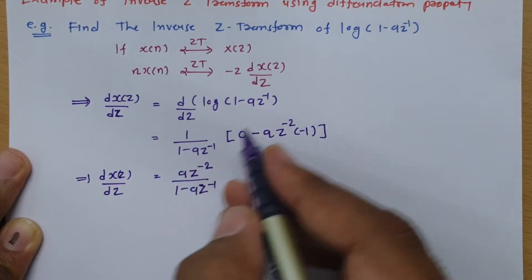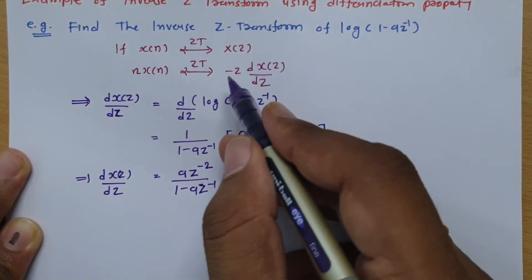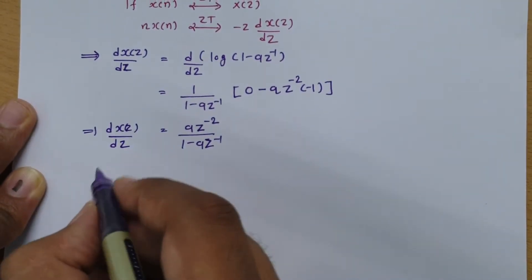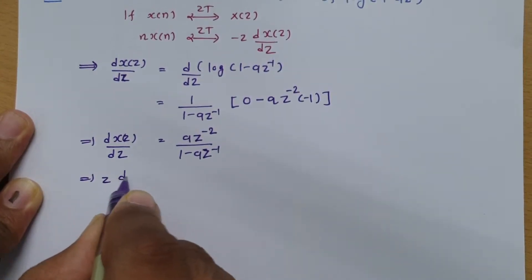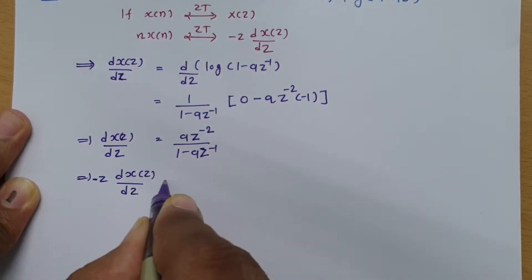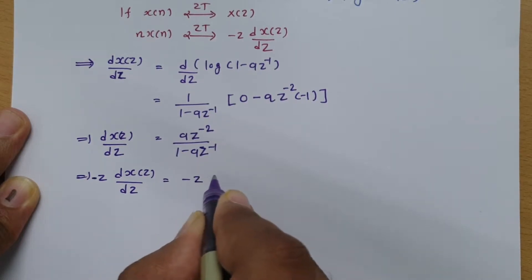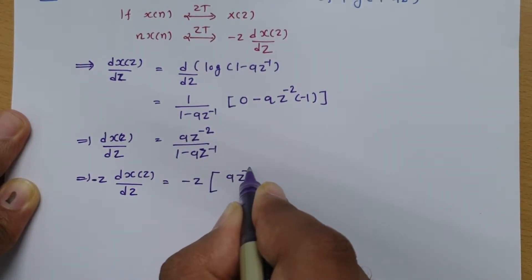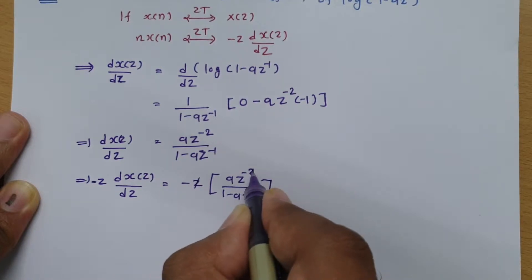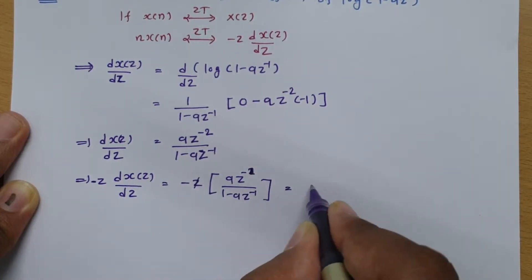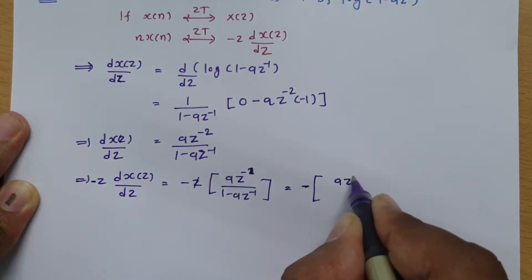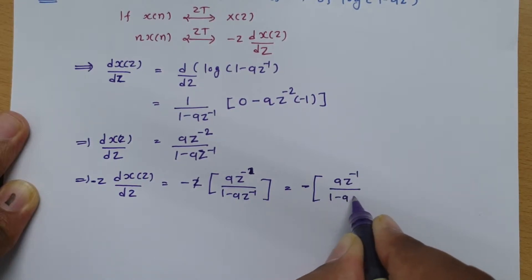Now we need the form -z · dX(z)/dz, so I will multiply -z with dX(z)/dz. That gives -z · az⁻²/(1 - az⁻¹). One power of z cancels, reducing z⁻² to z⁻¹. So this simplifies to -az⁻¹/(1 - az⁻¹).